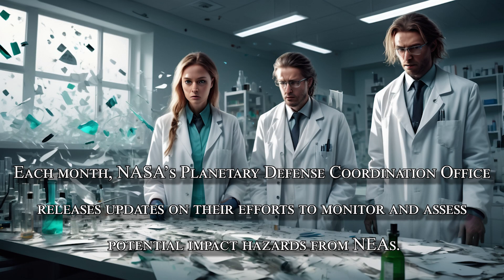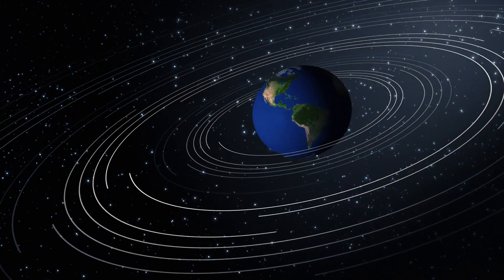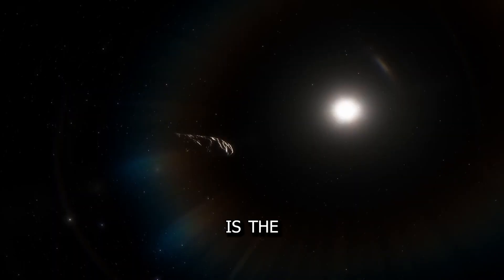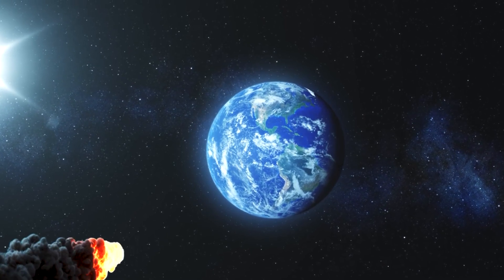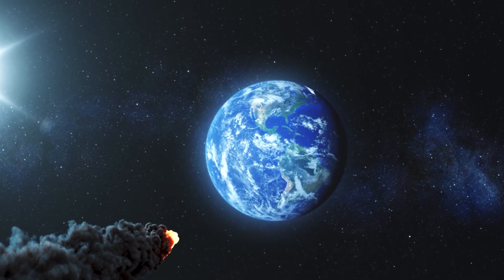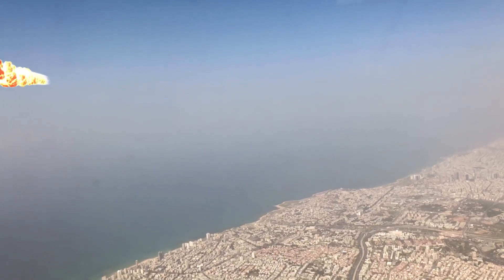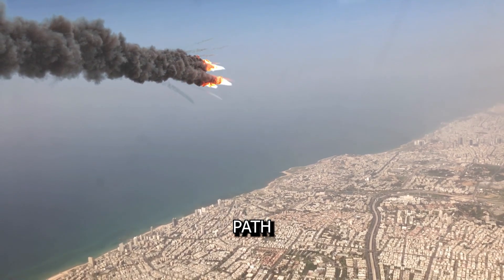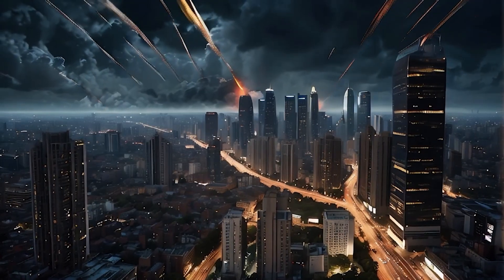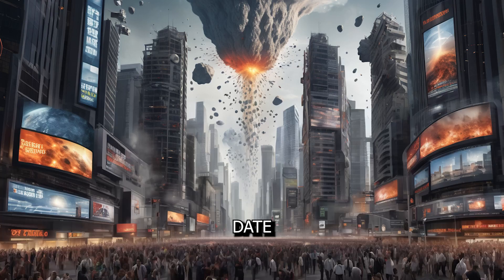The tension would be palpable as scientists scramble to refine its projected path. The real danger is the unknown. With a potential impact around 2040, it's a cosmic curveball scientists are keeping a close eye on. Would governments preemptively evacuate major cities in its potential path? How would this global uncertainty reshape society in the lead-up to the potential impact date?